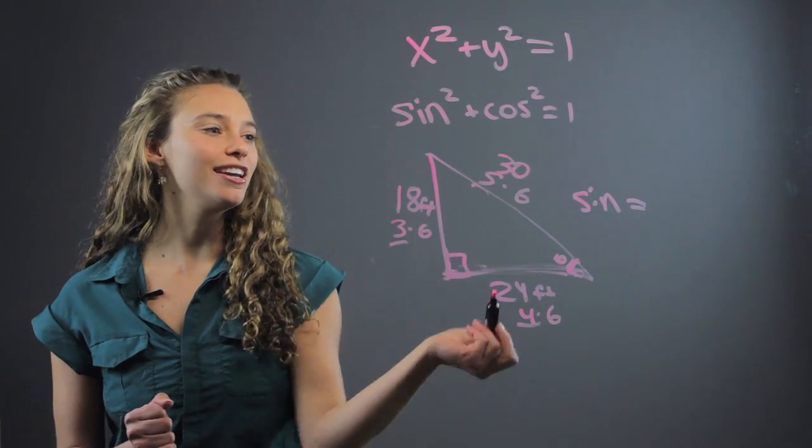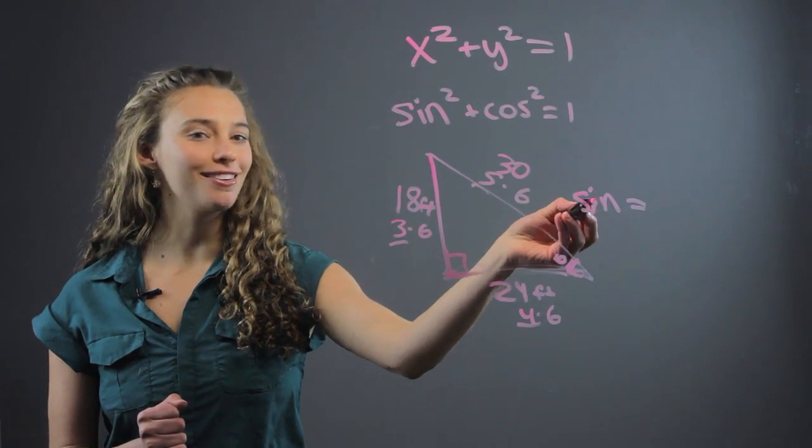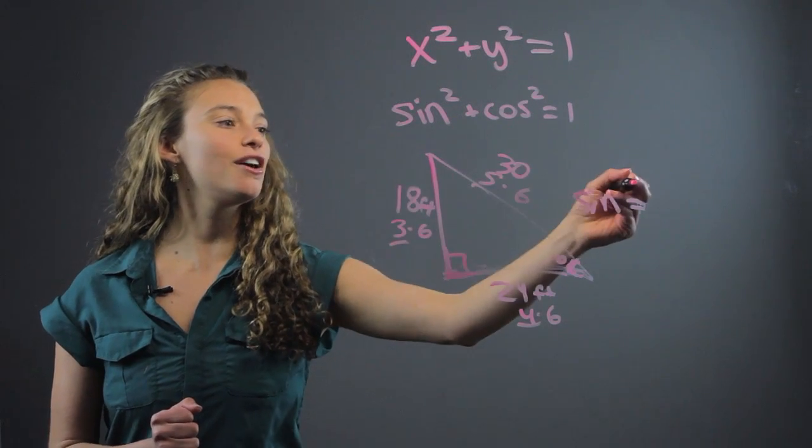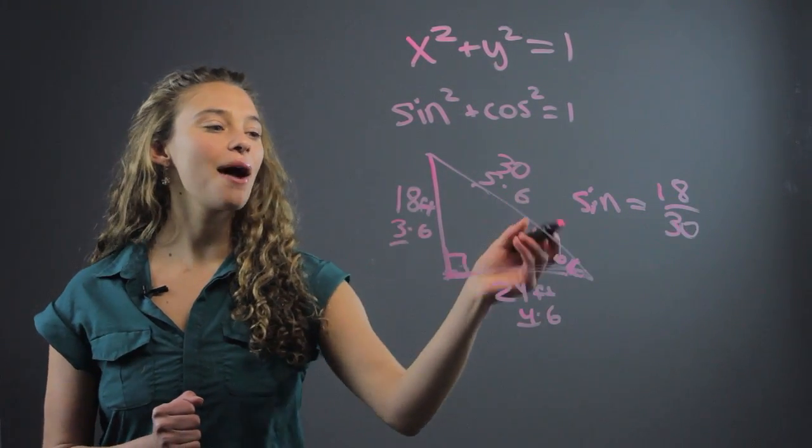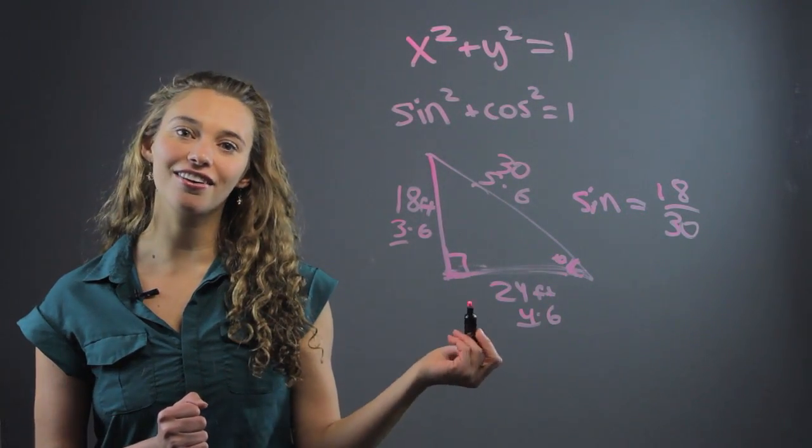So we want to find the sine of this angle. So it's going to be 18 over 30, and we take the sine of that, and that will give us the measure of this angle.